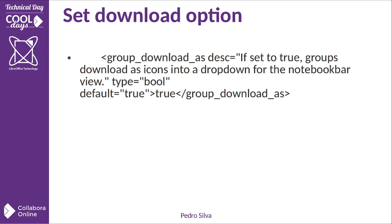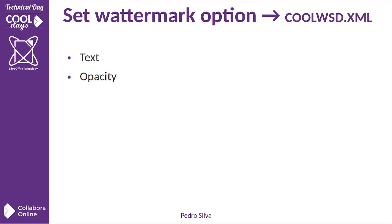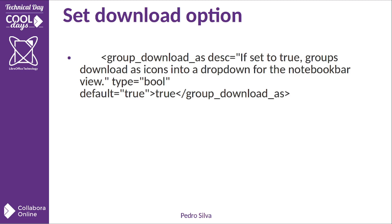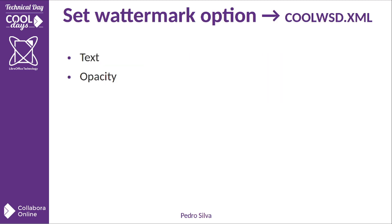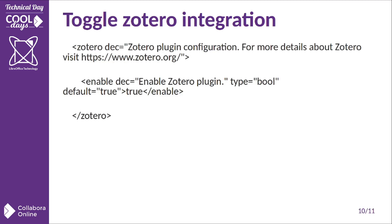There are also other options — it's impossible to cover everything in this talk. You can set different download options, choosing between a dropdown in the UI or each option represented as an icon. There is also a watermark option where you can set the text and opacity of how the watermark should look. These are just examples of features you can enable and disable via cool WST.